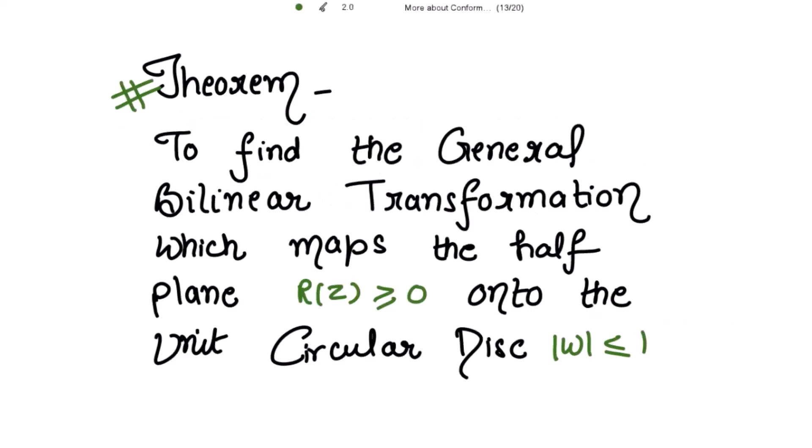Good morning! The theorem is: to find the general bilinear transformation which maps the half plane onto the unit circular disk, mod w less than or equal to 1.